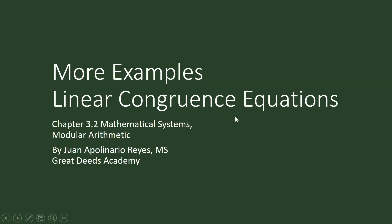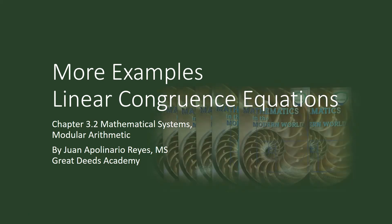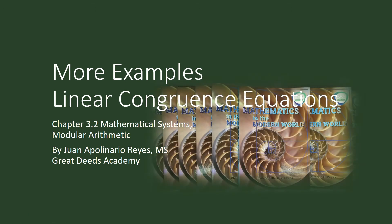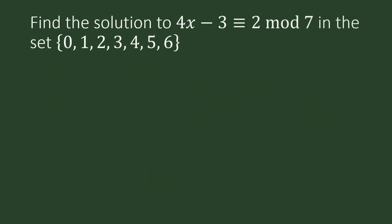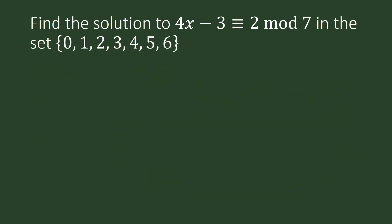We shall solve more examples in linear congruence equations. Find the solution to 4x minus 3 is congruent to 2 modulo 7 in the given set.